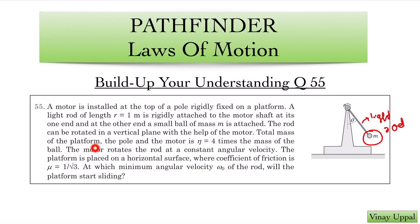The rod can be rotated in the vertical plane with the help of the motor. Total mass of the platform, the pole and the motor is 4 times the mass of the ball. So if the mass of the ball is m, this entire thing is 4m. The motor rotates the rod at a constant angular velocity. The platform is placed on a horizontal surface where coefficient of friction is mu equal to 1 by root 3. At which minimum angular velocity omega 0 of the rod will the platform start sliding?